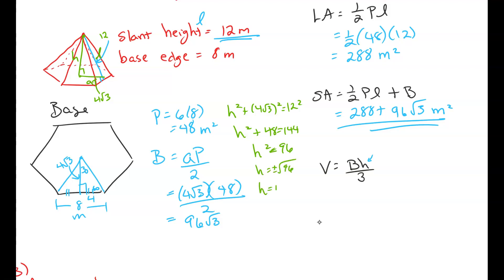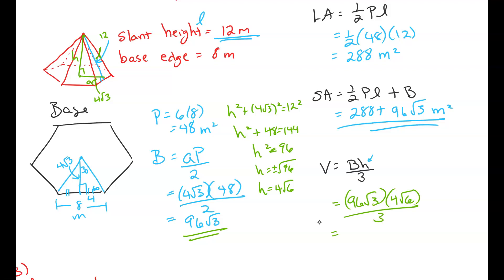Height squared plus we have 16 times 3 would be 48 equals 144. Height squared is going to be 96 plus reminds the square of 96. Our height, my friends, is going to end up being 4 root 6. So now we have everything we need in order to simplify for the volume. We have the area of the base which was 96 root 3. We have the height which we calculate to be 4 root 6 all over 3.